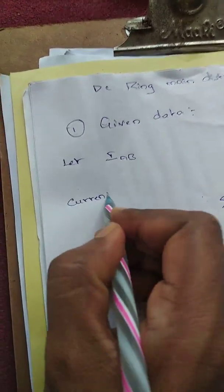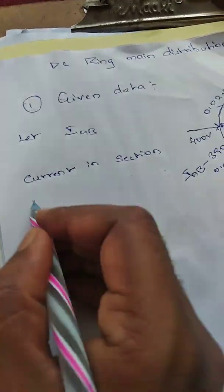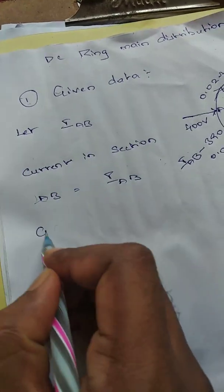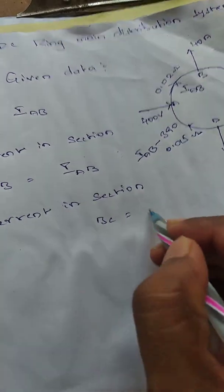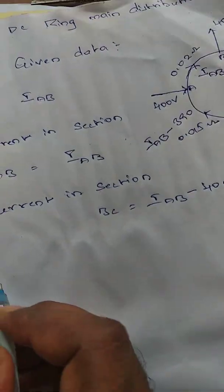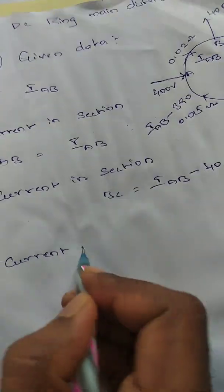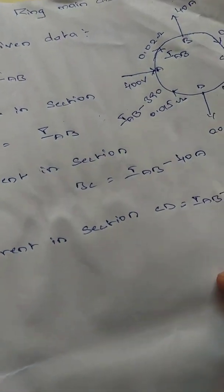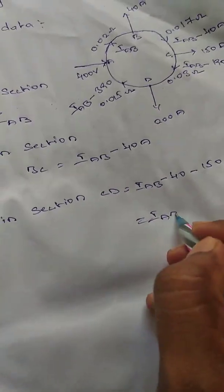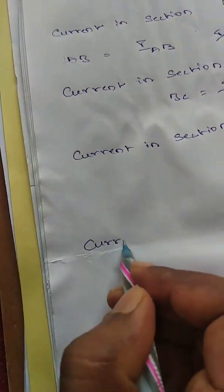Current in section AB is equal to IAB. Current in section BC is equal to IAB minus 40 amps. Current in section CD is equal to IAB minus 190. Current in section DA is IAB minus 190 minus 200, which is nothing but IAB minus 390.